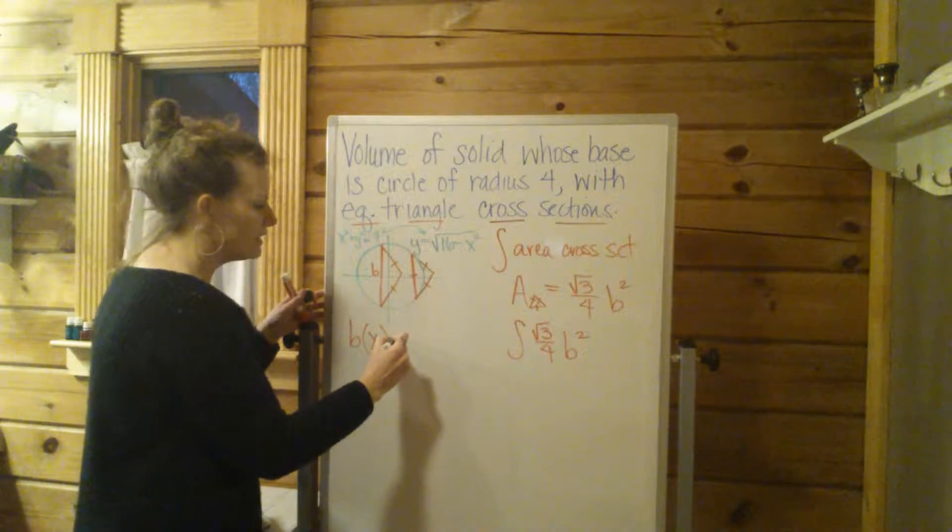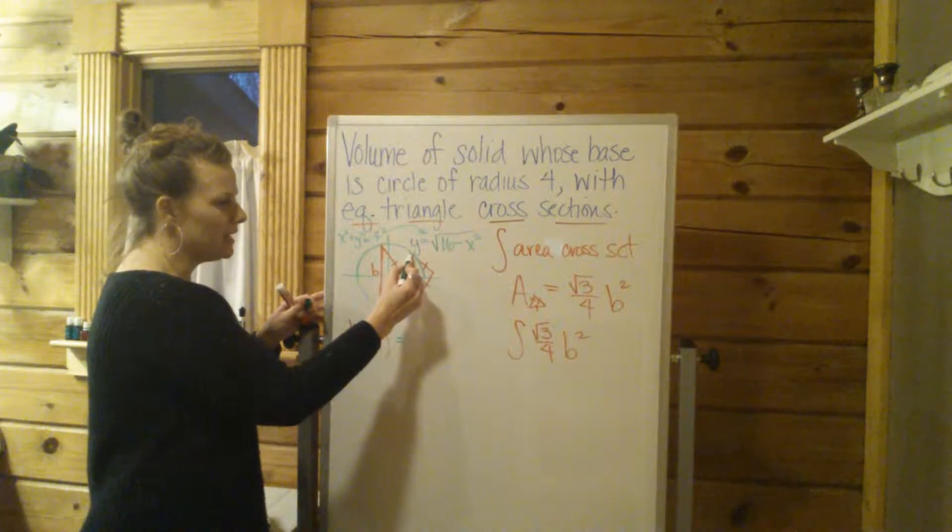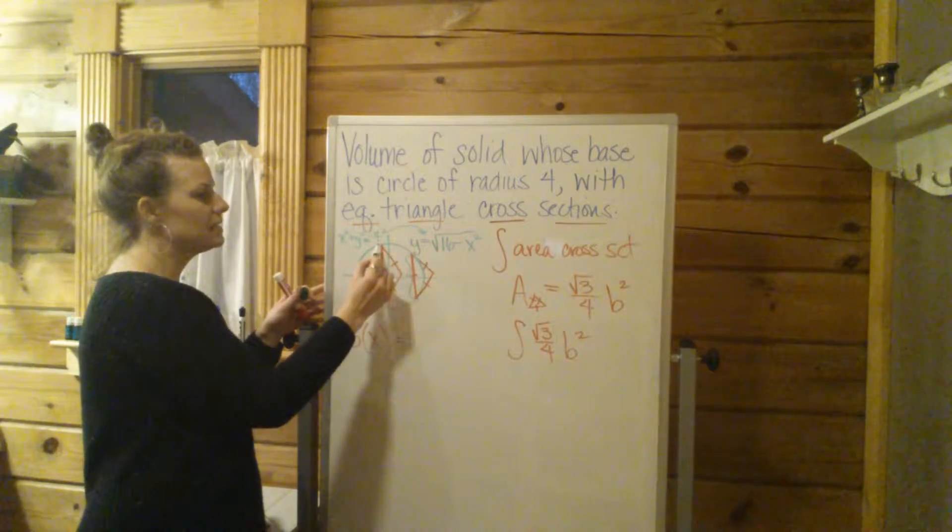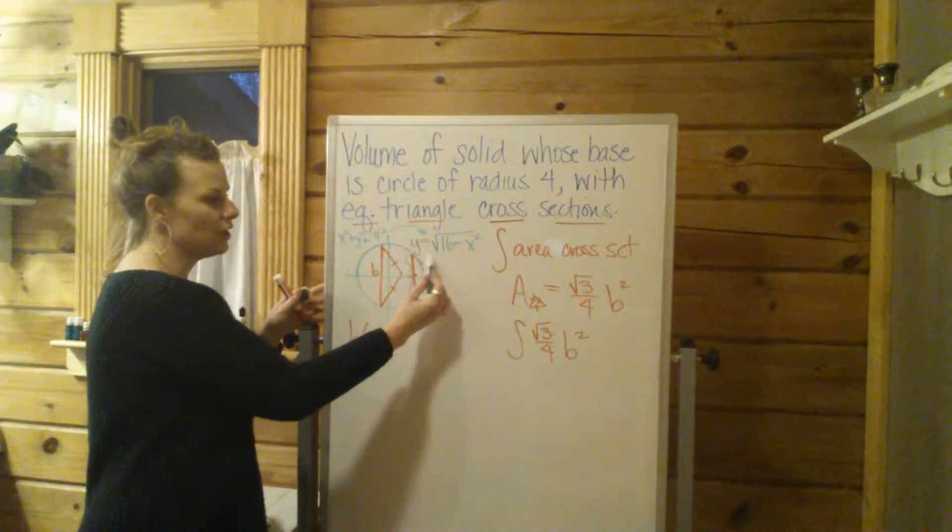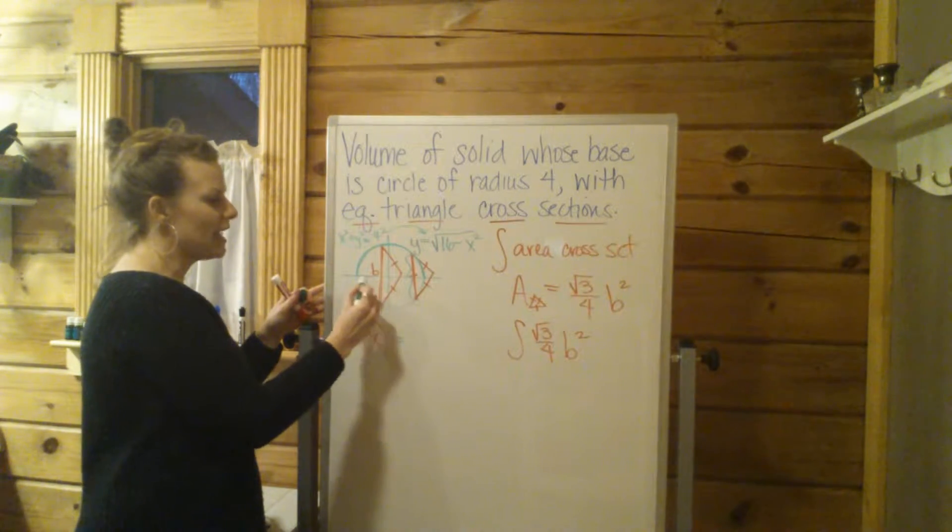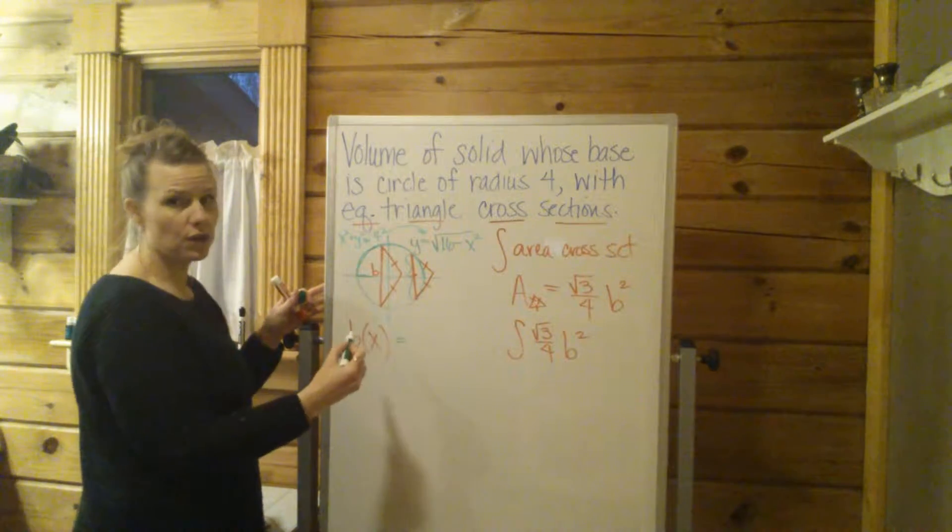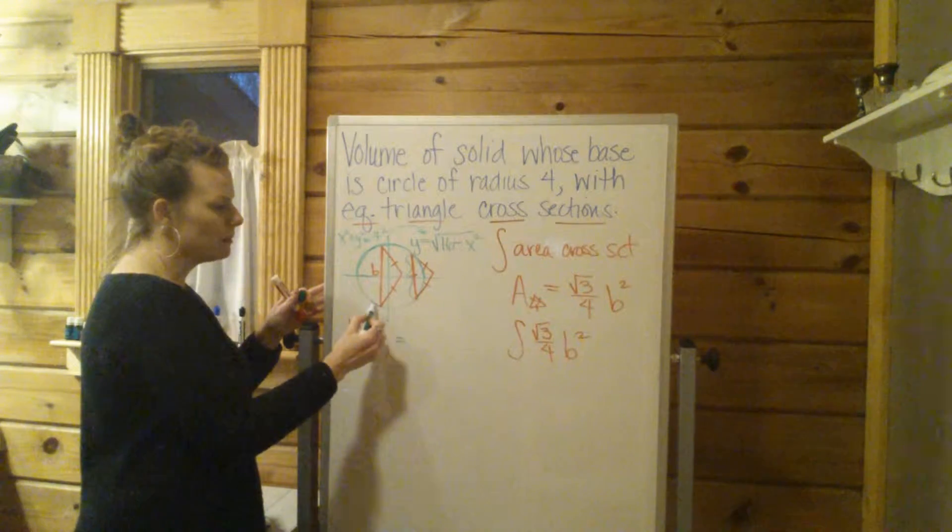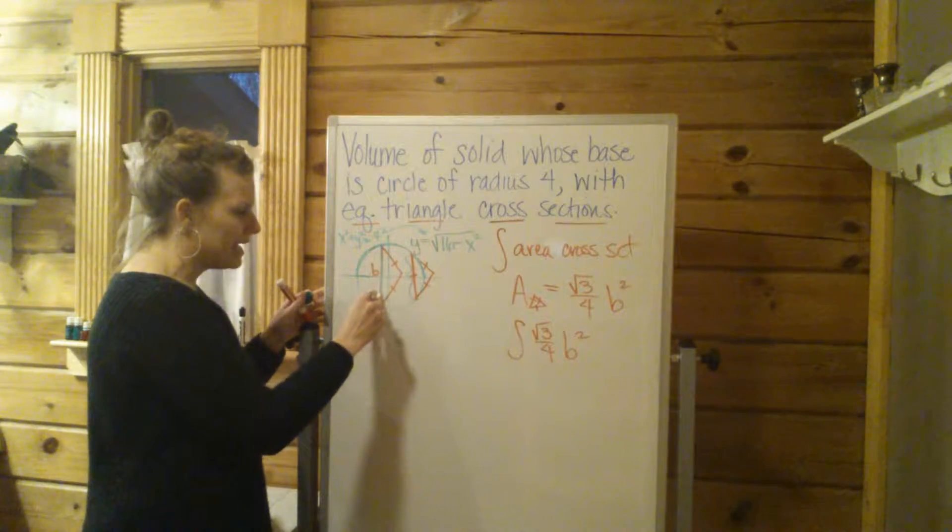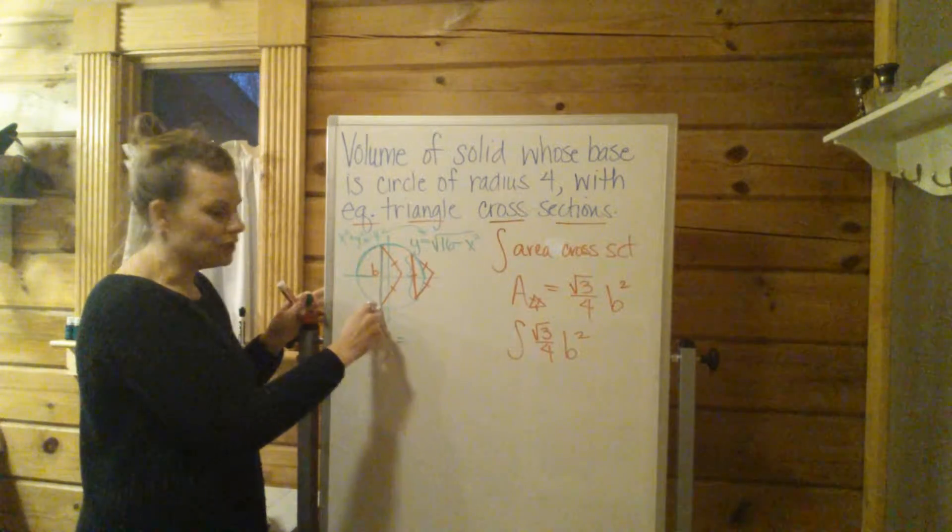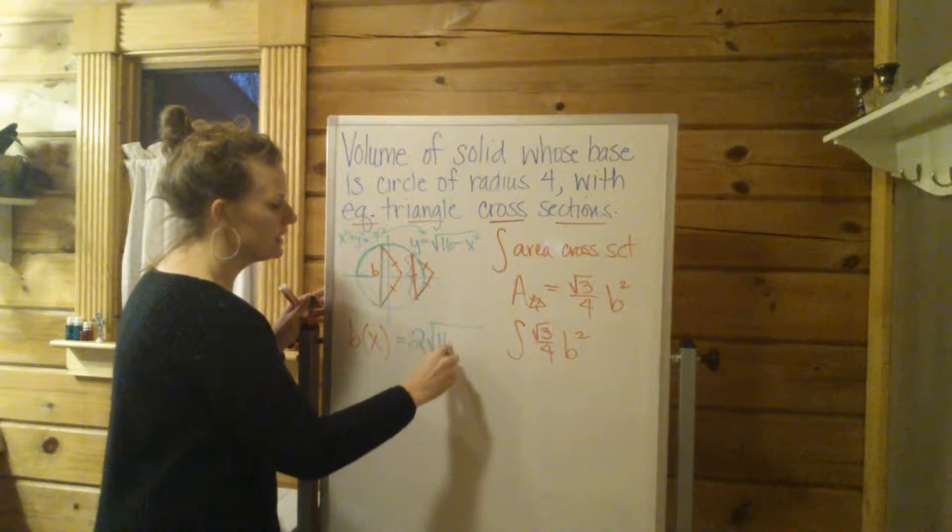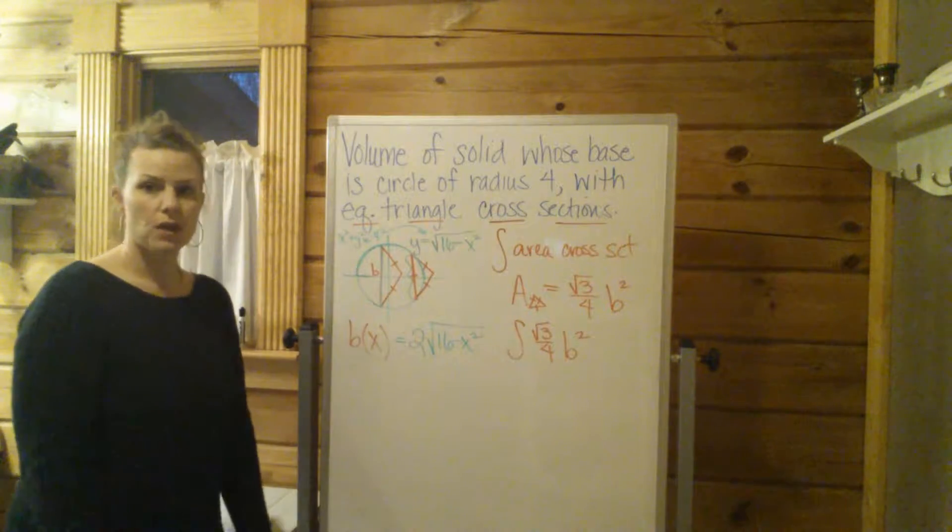Now if this makes sense to you, this distance b is always going to be 2 times that because this y value is representing the top semi-circle. So that's the distance from the x-axis to the top of the circle. Well, we also have the x-axis to the bottom of the circle, which is going to be the same distance. So the b base, that bottom of that triangle is actually going to be 2 times the square root of 16 minus x squared.